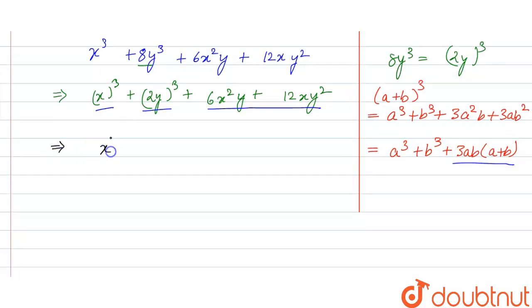So we have x cube plus 2y whole cube as it is and if we take 6xy common from these two terms we are left with x plus 2y.